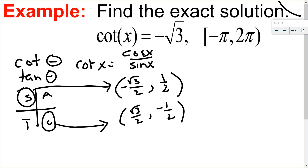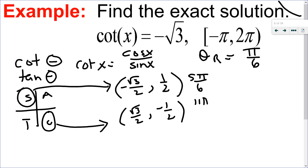I can figure out my reference angle: where I have coordinates (√3/2, 1/2), that's 30 degrees or π/6. Using the radian trick — in quadrant 2, the numerator is 1 less than the denominator, so that gives 5π/6. In quadrant 4, the numerator is double 1 less than the denominator, so that gives 11π/6.